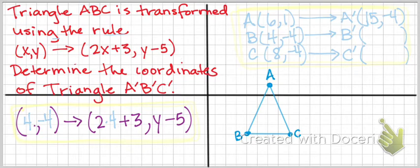2 times 4 is 8, plus 3 is 11. To get our new Y, we take our original Y, negative 4, and we subtract 5. Negative 4 minus 5 is negative 9. So our coordinates are (11, -9) for our new point B after we've applied that rule.